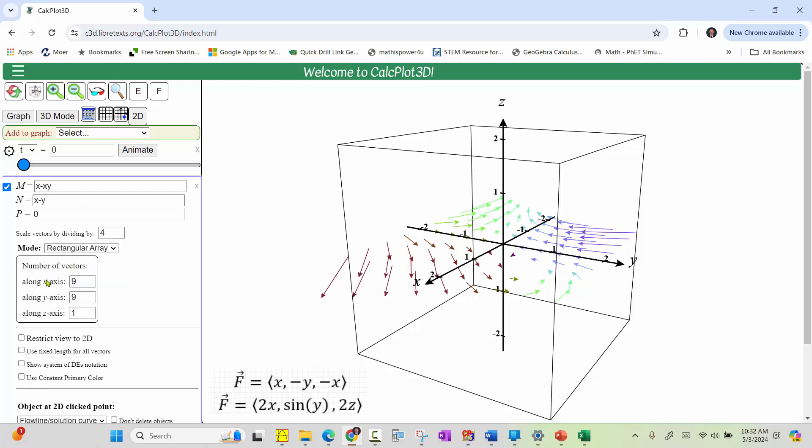We can also control the number of vectors along the three axes. Because we have a 3D vector field, let's set the number of vectors along each of the axes to 9. And we have some additional options below.